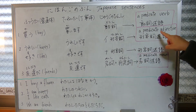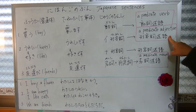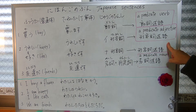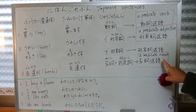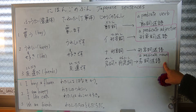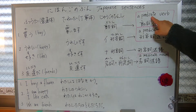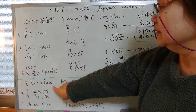Ii keiyoshi — a predicate adjective — keiyoshi jutsugo. Na keiyoshi is also a predicate adjective. And meishi plus hanteishi — a predicate noun. Okay, the predicate jutsugo is located at the end of the sentence in principle.